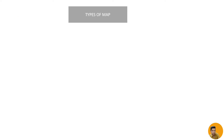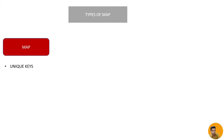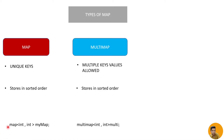There are different types of maps available. First is a regular map, which we are talking about. It stores unique keys — there will be no two keys having the same value. The keys are stored in sorted order, and this is how we declare our map. We will do a hands-on of this.